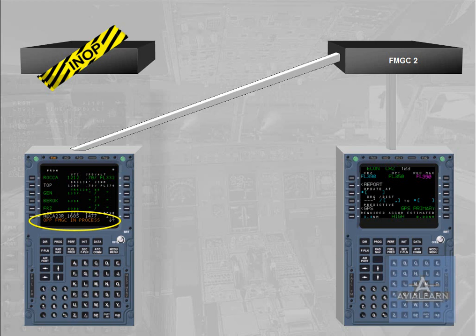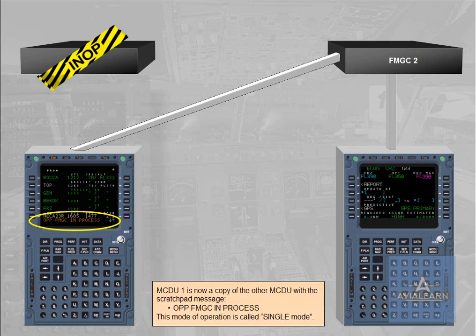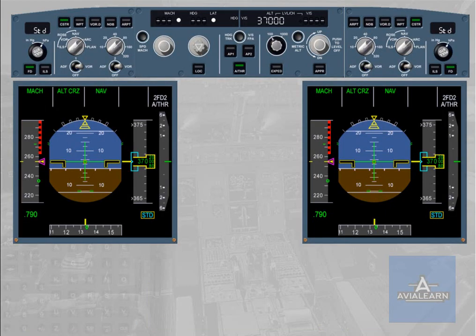This mode of operation is called single mode. Both FMAs display Flight Director 2, indicating that flight director bars on both PFDs are driven by FMGC 2. Additionally, only FMGC 2 position is computed and FMGC 2 tunes the off-side nav aids.